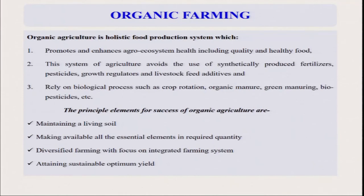Whenever the yield potential of these crops is very high, their nutrient demand will also be very high. That is why we have to take many organic nutrient management options for supplying manure or organic nutrients to horticultural crops, especially fruits and vegetables. Diversified farming with a focus on integrated farming systems — not only single crop basis like only tomato or potato — we always try to promote crop diversification so that different types of crops can be grown in a particular area. Apart from crops, we can also include fishery, livestock, cattle, and poultry within the same farm, so that we can produce enough manure for the horticultural crops.